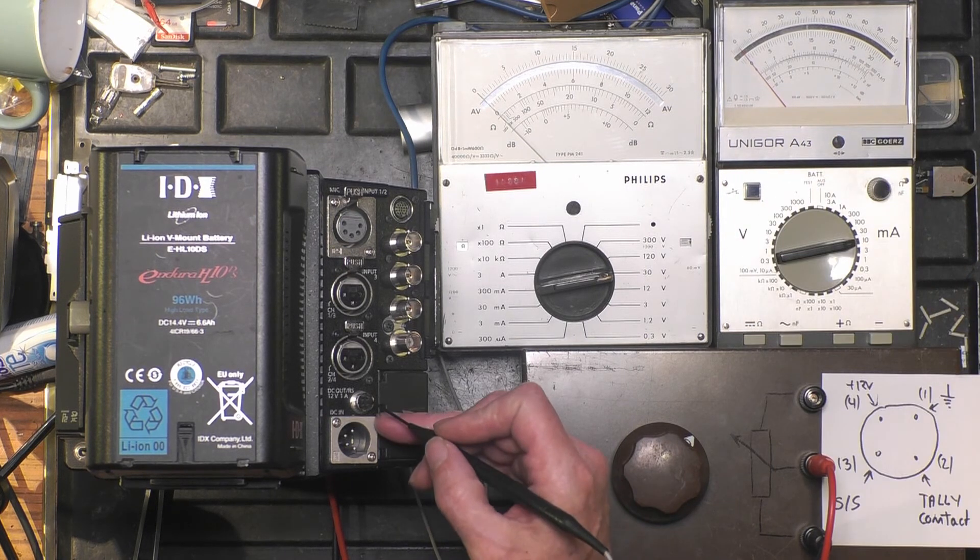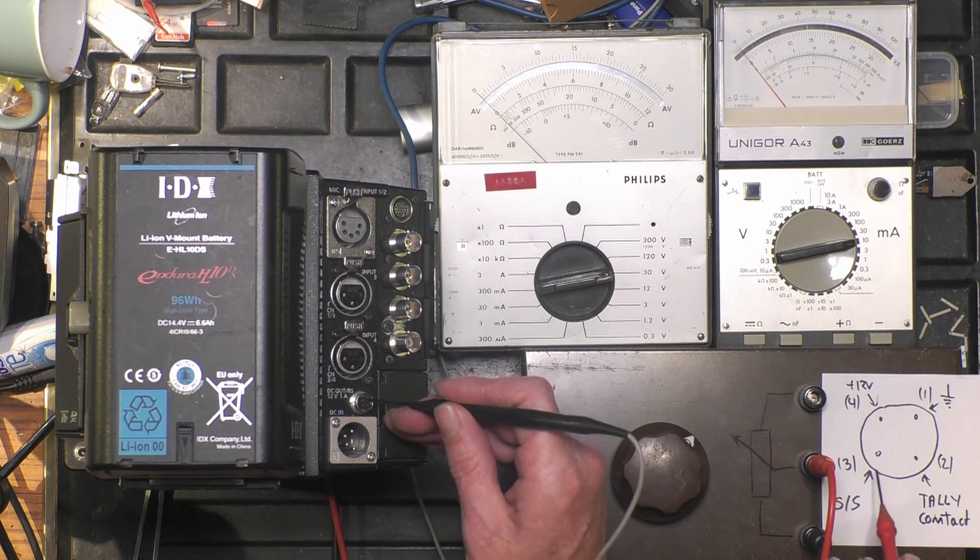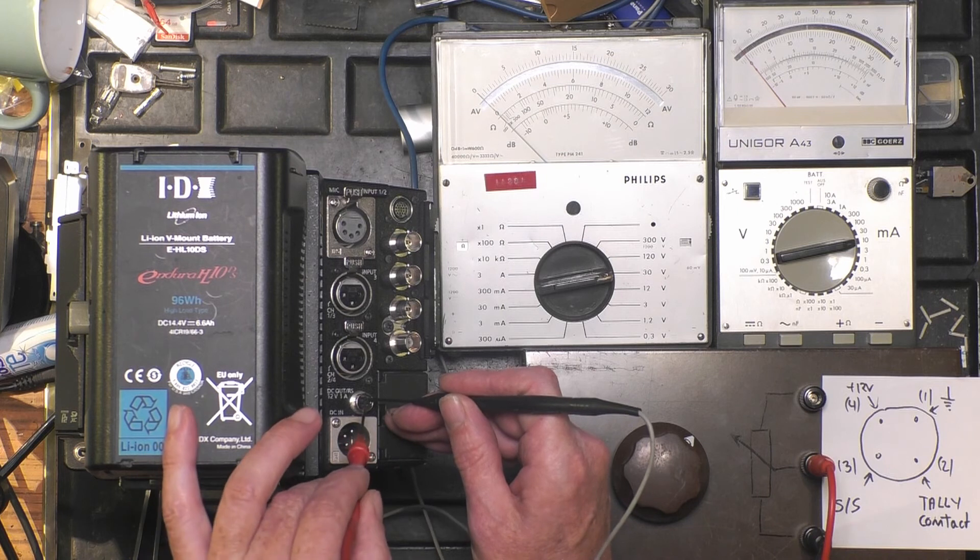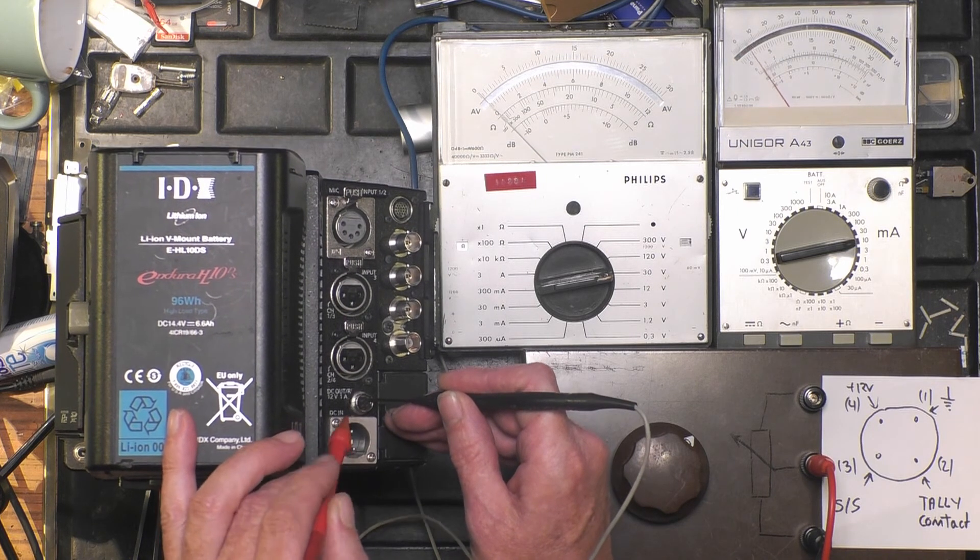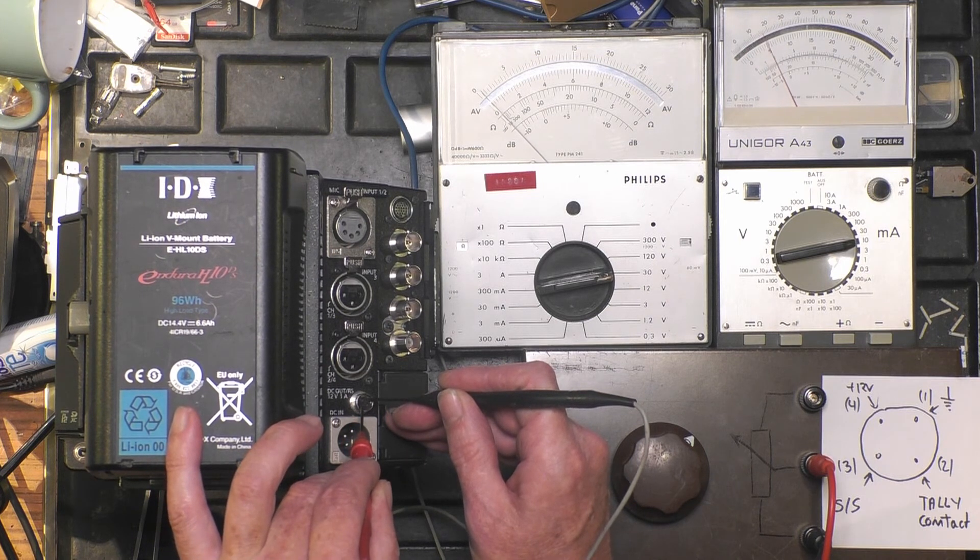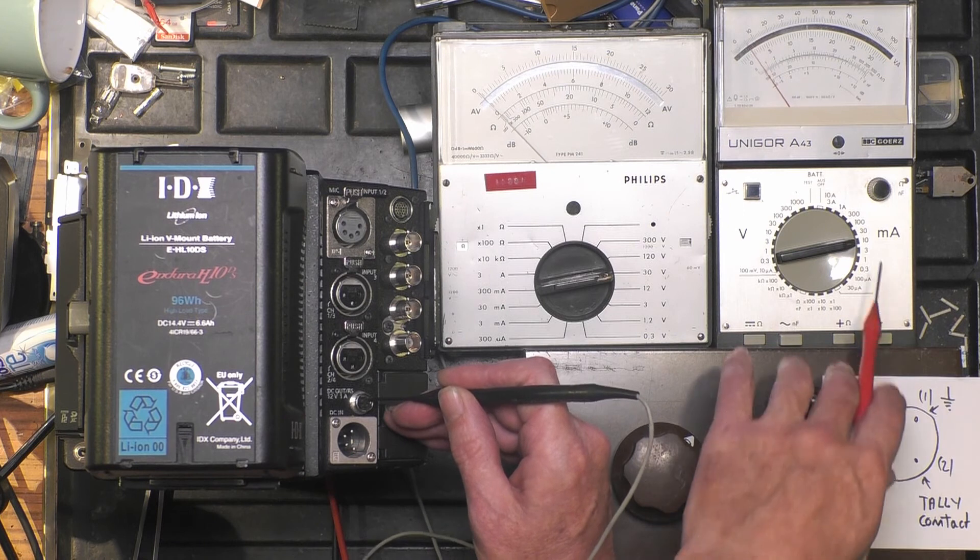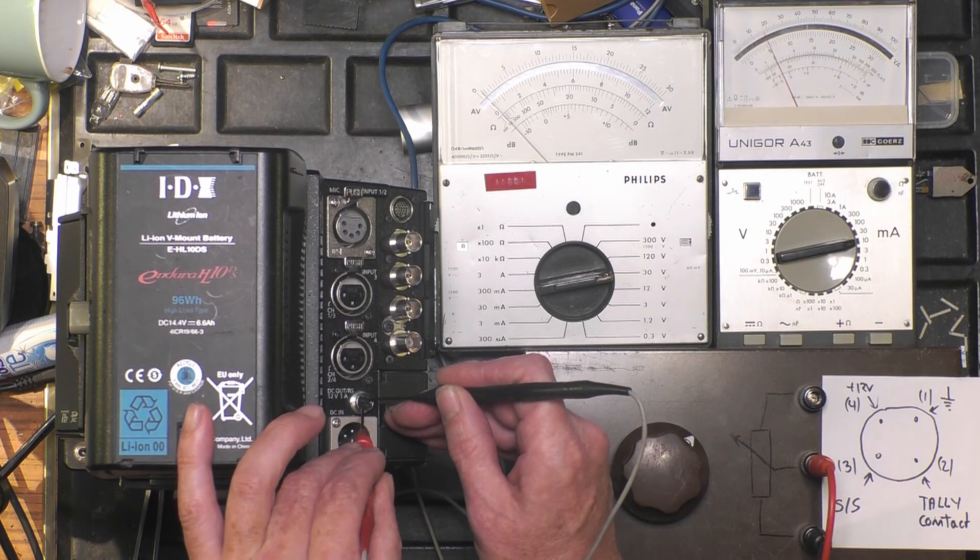So ground, pin 1, and then pin 3 for start-stop. Listen very carefully. Yes, it started recording, and now it stopped recording. And you can see on the amp meter it takes about 2 milliamps, which is fine.